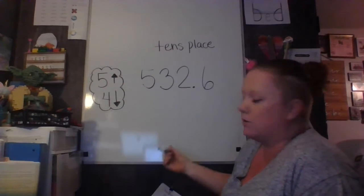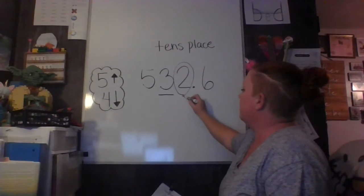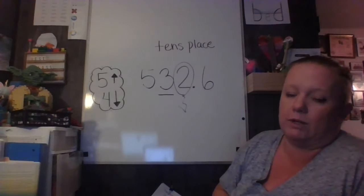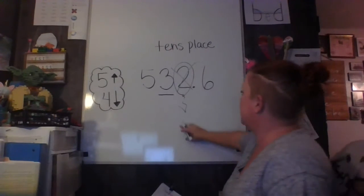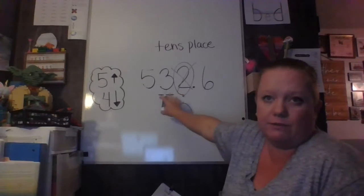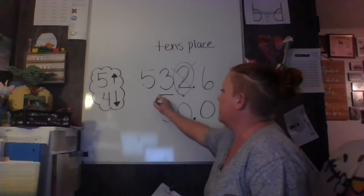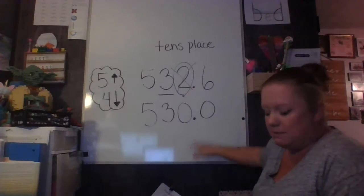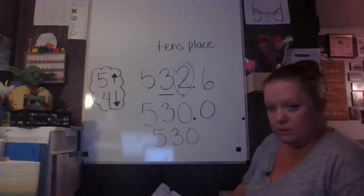For rounding this number to the tens place, the first thing we're gonna do is underline the tens place, and directly behind that we're gonna draw a balloon. We're gonna ask ourselves two questions: is this number five and above, or is it four and below? This number's two, so it's four and below, which means this number is going to pop. When it pops, there is nothing left in this balloon. This is the only spot that's gonna change — just the balloon. Everything behind it turns to zeros, and everything in front stays the same. Now when we look at this number, we have 530 and no decimals, so we can simply write this number as 530.